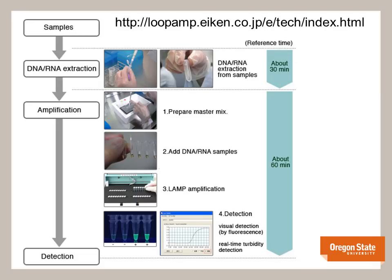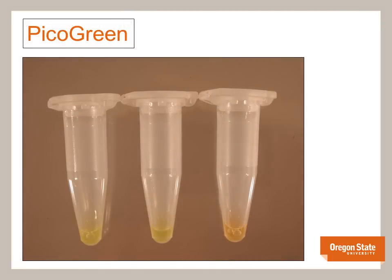Following amplification, the tubes are briefly spun down and 10 microliters of product is added to 2 microliters of PicoGreen. This is best done in a separate room, since the lab environment is easily contaminated by the LAMP product and can cause false positives in future LAMP reactions. Once the orange-coloured PicoGreen is added to your product, look out for a colour change. If the sample contains DNA from a virulent Rhodococcus fascians strain, the colour in the tube will change to yellow, as seen in the tubes on the left and in the middle. If this DNA is not present, the tube's content will remain orange, as seen on the right.